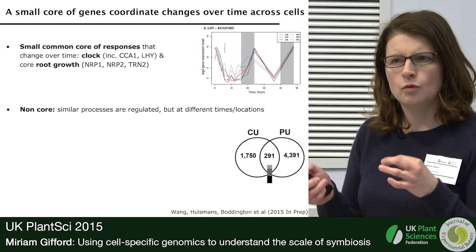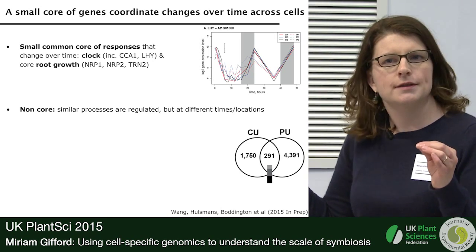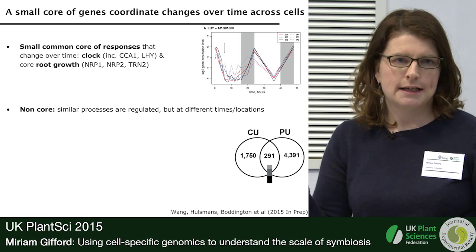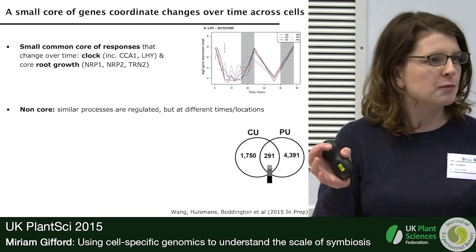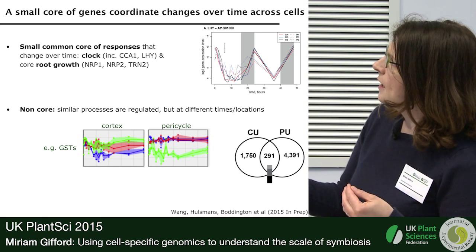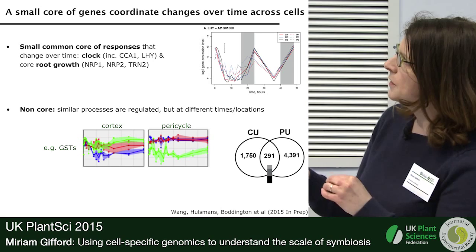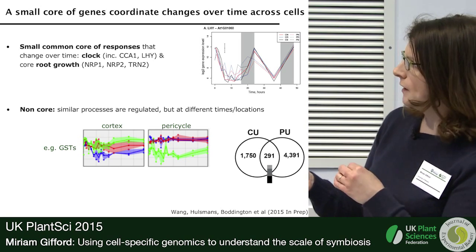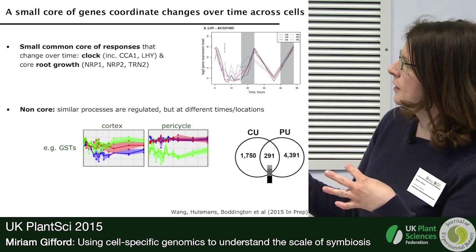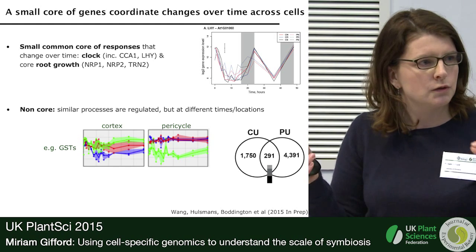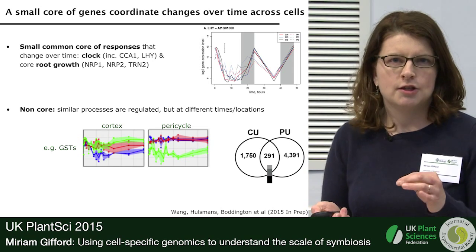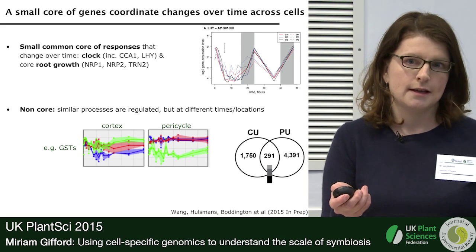When we looked in more detail at what was cell-specific, it wasn't as different as we thought, because although different genes change in each cell type, they actually represent similar processes. So similar processes change over time, but different individual genes are involved. For example, here are three members of a glutathione transferase gene family, which we know have important metabolic roles. Plotting their expression in cortex and pericycle, you can see different individual genes changing — the same process changes, but they use different genes, suggesting quite a lot of genetic non-redundancy within gene families.